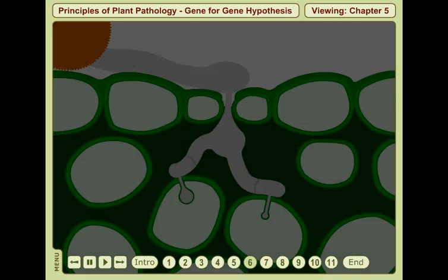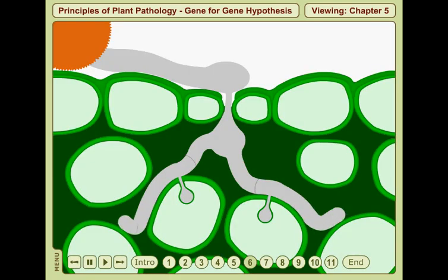If this occurs, the hyphae of the pathogen continue to colonize the intercellular spaces in the host leaf and the infected cells remain alive.